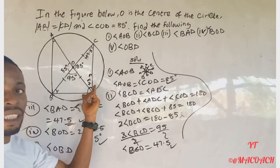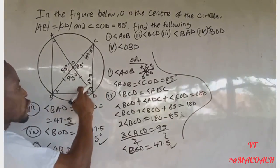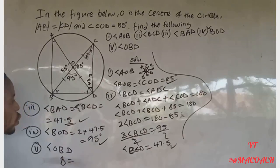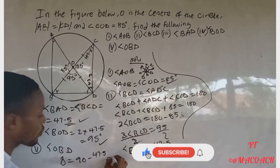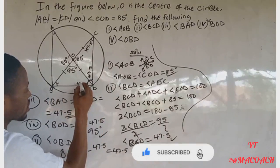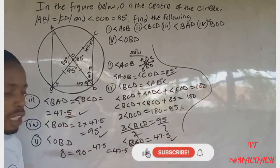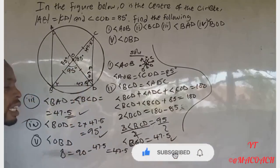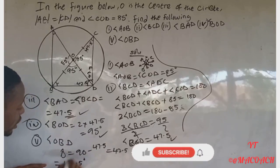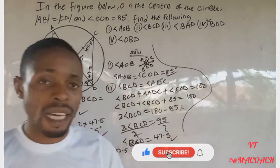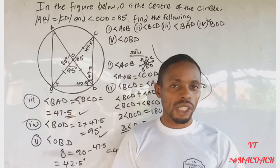Since the angle at the semicircle is 90°, we get: angle OBD equals 90° minus 47.5°, which gives 42.5°. Since the base angles of this isosceles triangle are equal, angle OBD equals 42.5°. That is the solution for today's question. Don't forget to subscribe, like, and comment if you have any questions. Thank you for watching — see you in the next video.